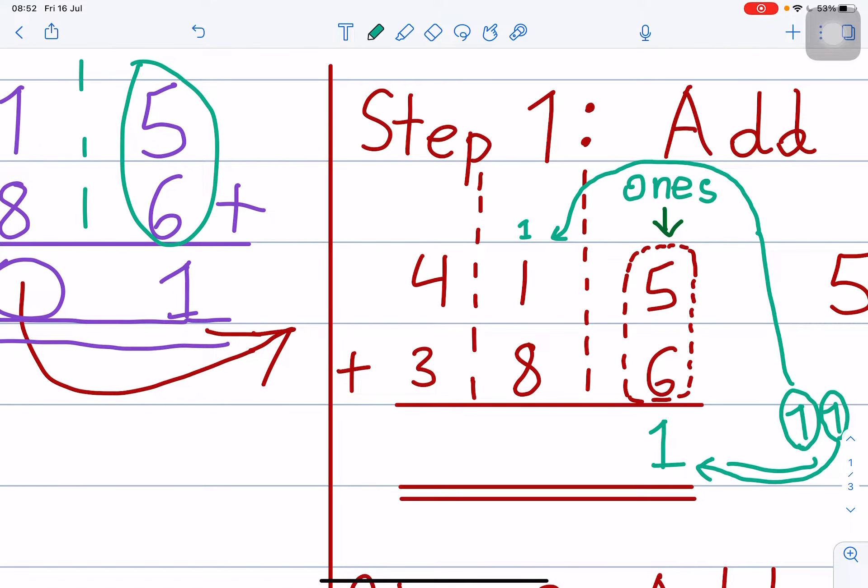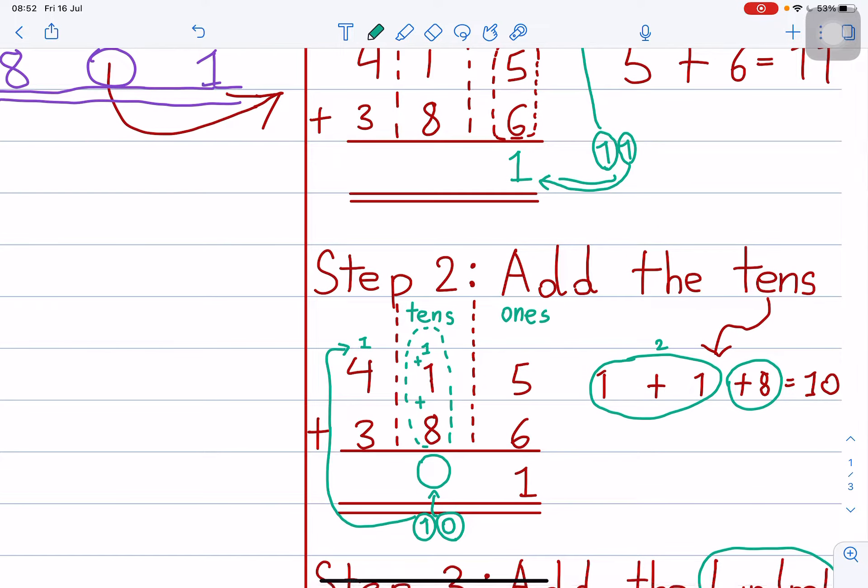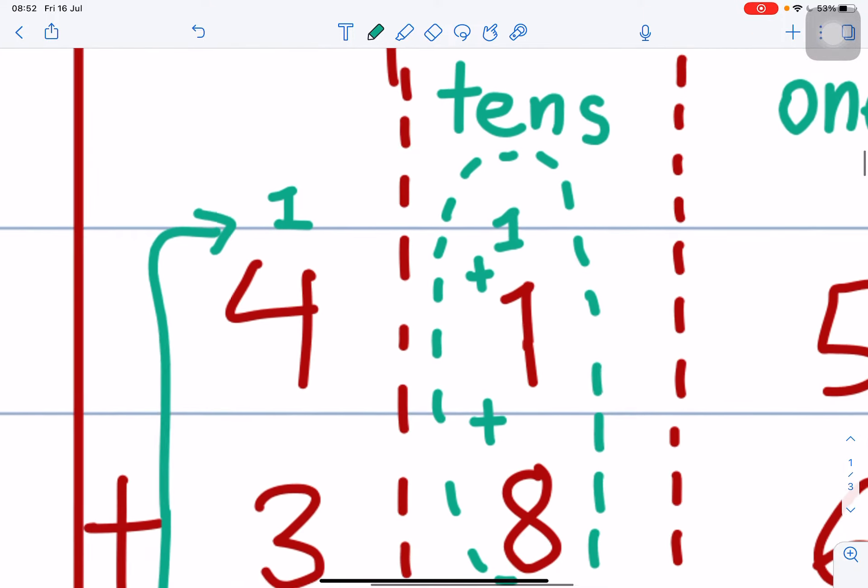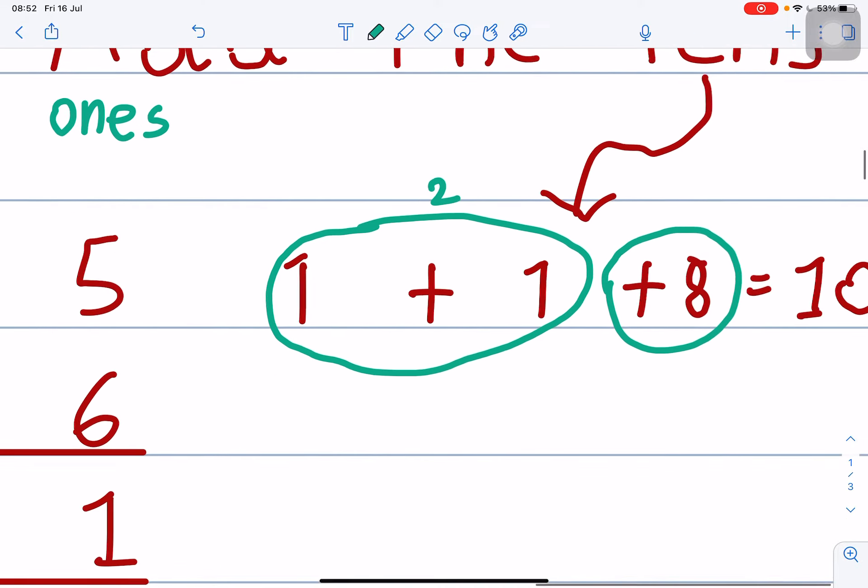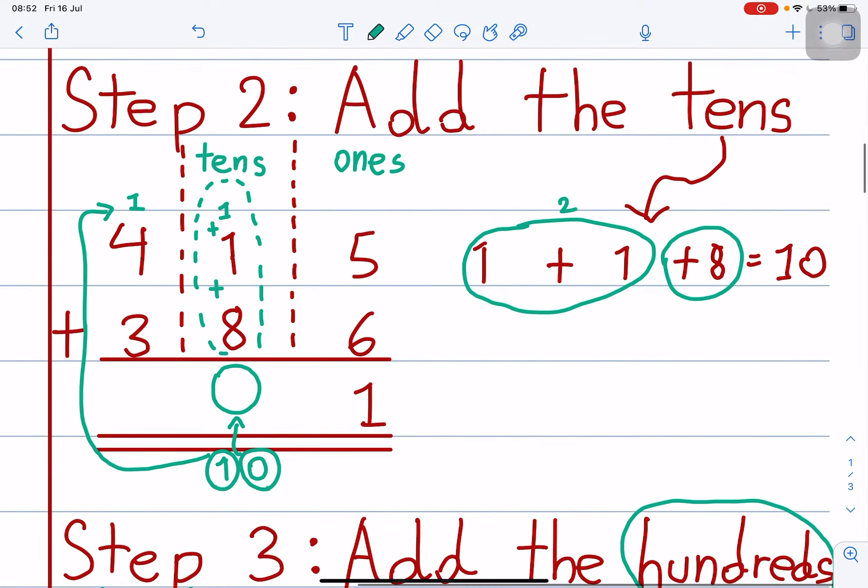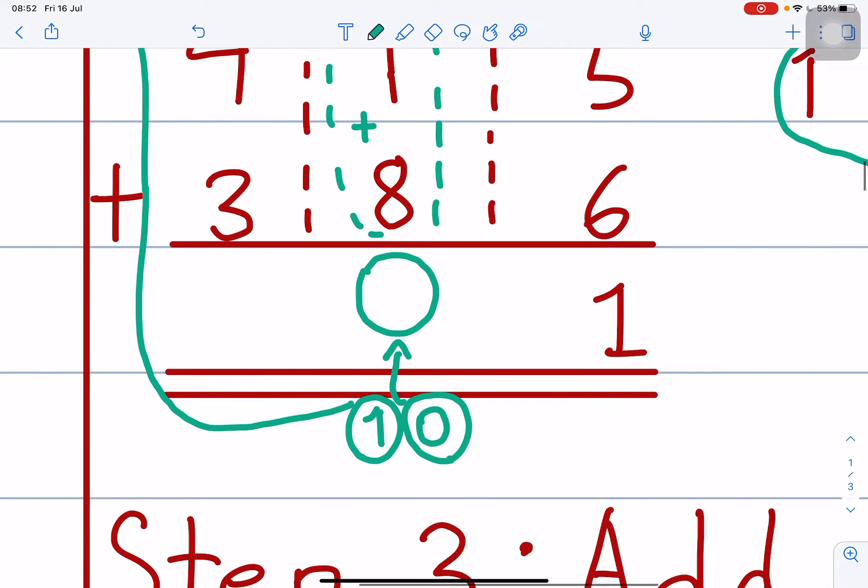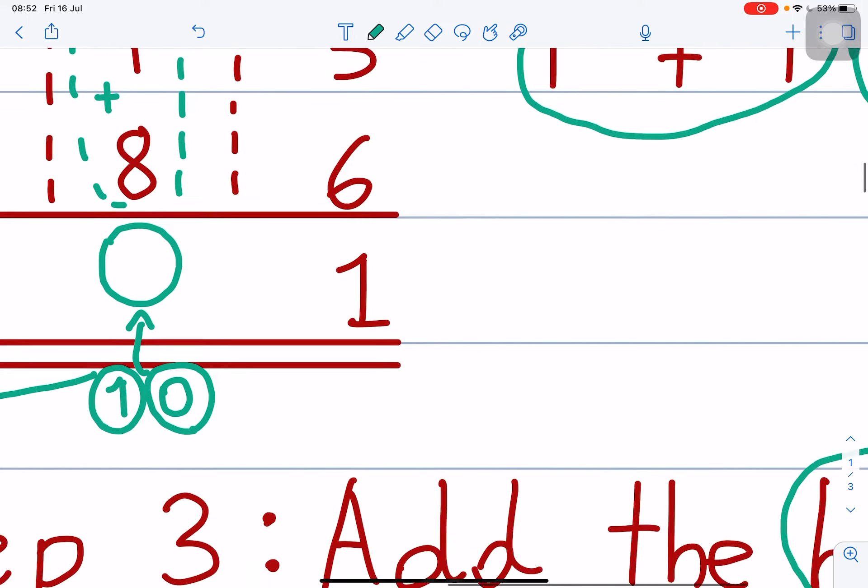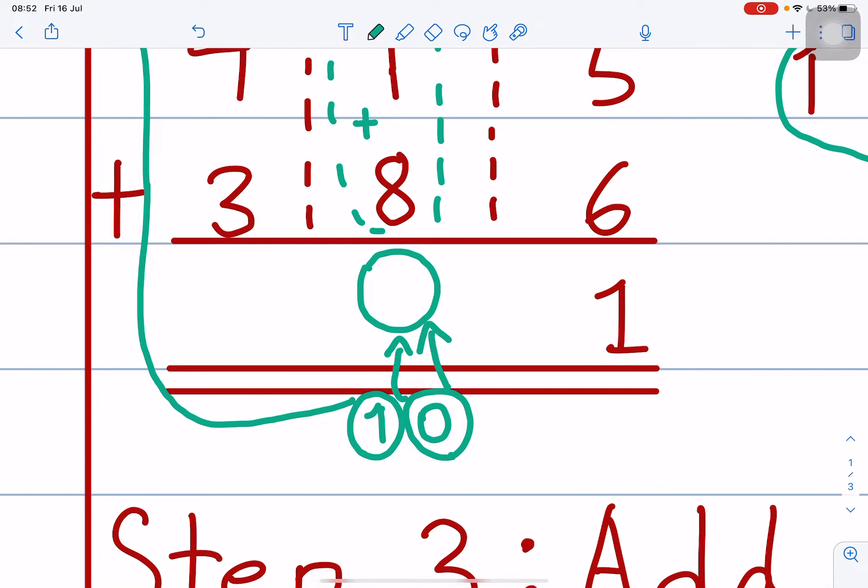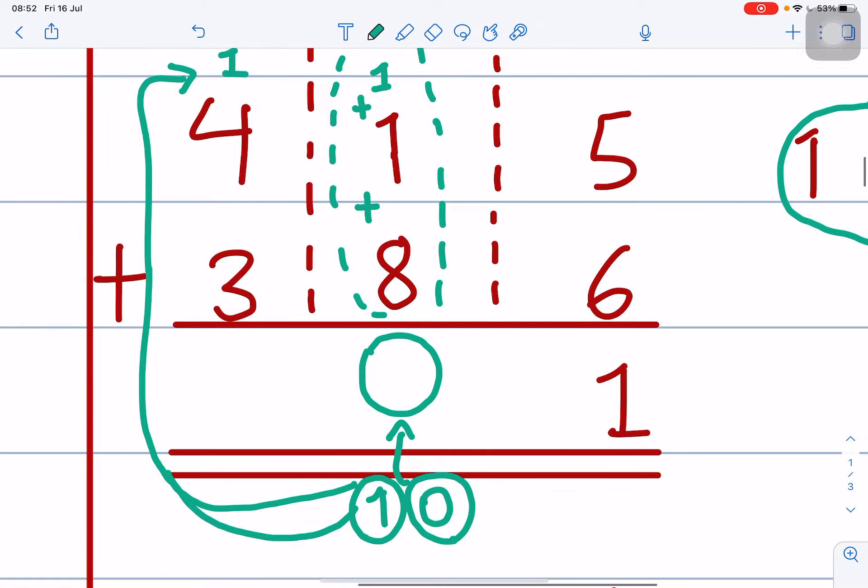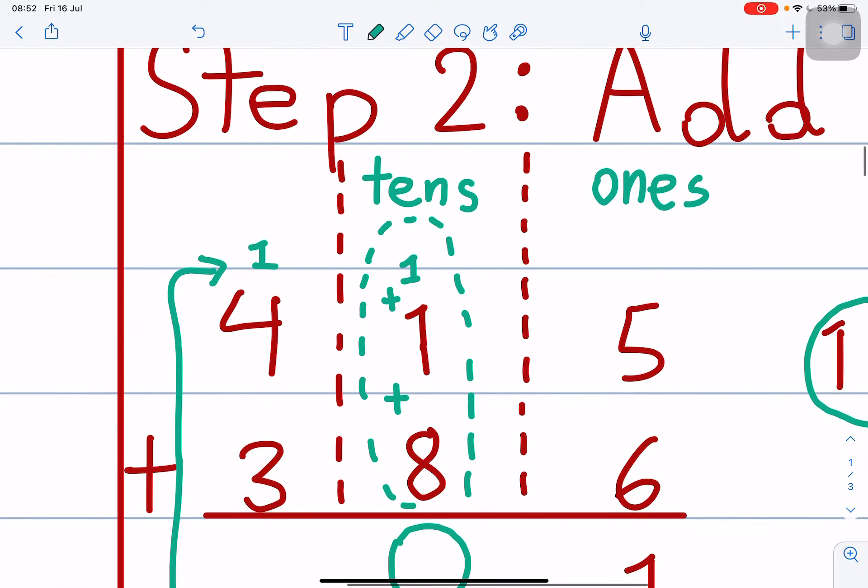After step one finished, then you go to step two. Step two you add the tens. Tens is here. That means 1 plus 1 plus 8 equals 10. Now tens also here, you must carry because 1 plus 1 plus 8 equals 10 here. So 0 you put over here and number one you carry and put over here.